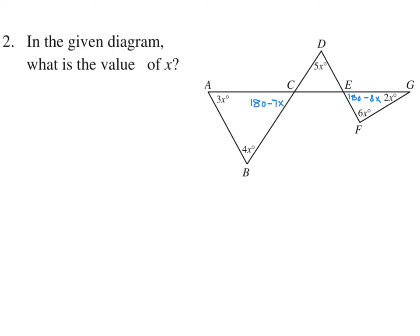Notice that this angle is the same as that angle. There's the rule that if you have two lines, this angle will be the same as that angle. So therefore, this is also 180 minus 7x, and this is 180 minus 8x. So then we take this triangle and add it all up: we have 180 minus 7x plus 180 minus 8x plus 5x. Don't forget that 5x angle up here, and all of this adds up to 180.